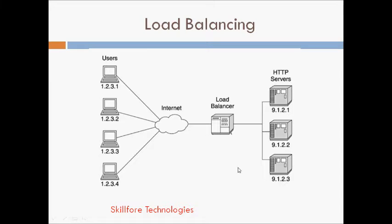To talk about affinity routing, let us consider this deployment structure as an example. Here you have the users — these are the user PCs, each of which has a different IP address. In reality there can be hundreds or thousands of such PCs all over the internet. The requests come from here and flow through the internet, they reach the load balancer, and the load balancer routes the requests to the HTTP servers. We have got three HTTP servers here.